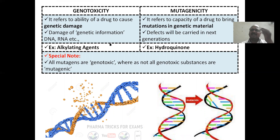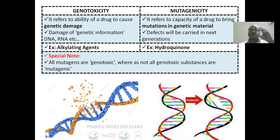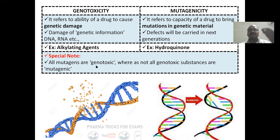Genotoxicity — it refers to the ability of a drug to cause genetic damage. If you are taking a drug, your genes will be damaged. For example, alkylating agents — anti-cancer drugs — damage the genetic information: DNA, RNA, and many other things.